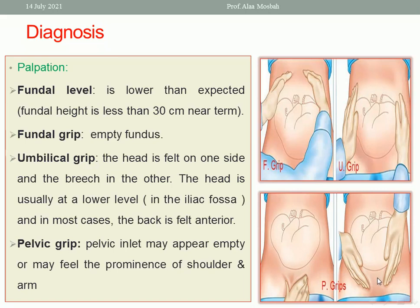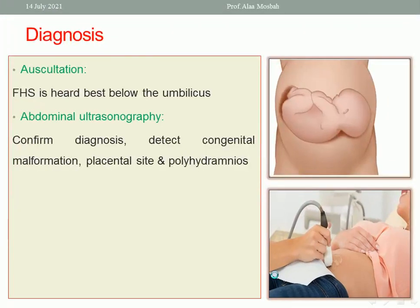By auscultation, the fetal heart sound is heard below the umbilicus. Abdominal ultrasonography confirms the diagnosis, excludes congenital anomalies, detects the placental site, and excludes the presence of polyhydramnios and multiple pregnancies.